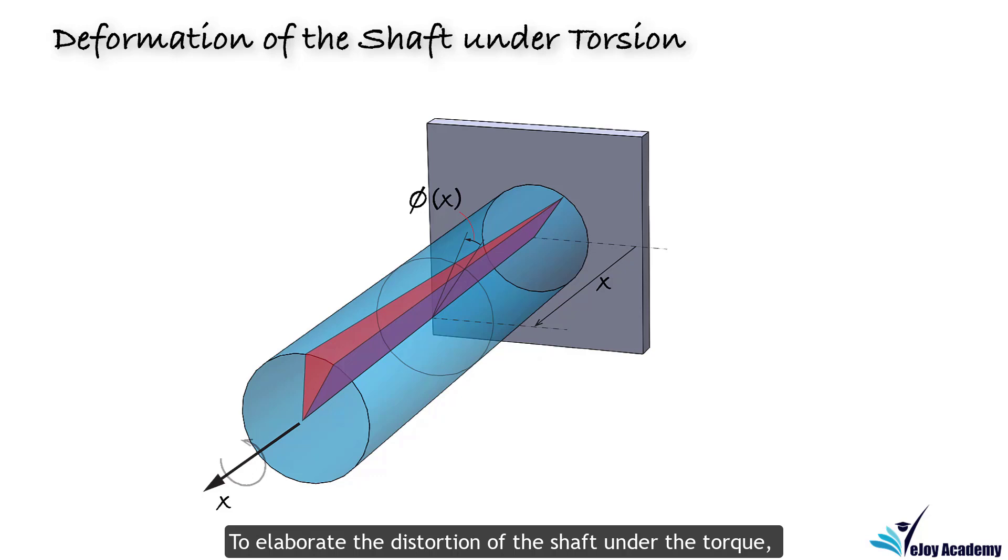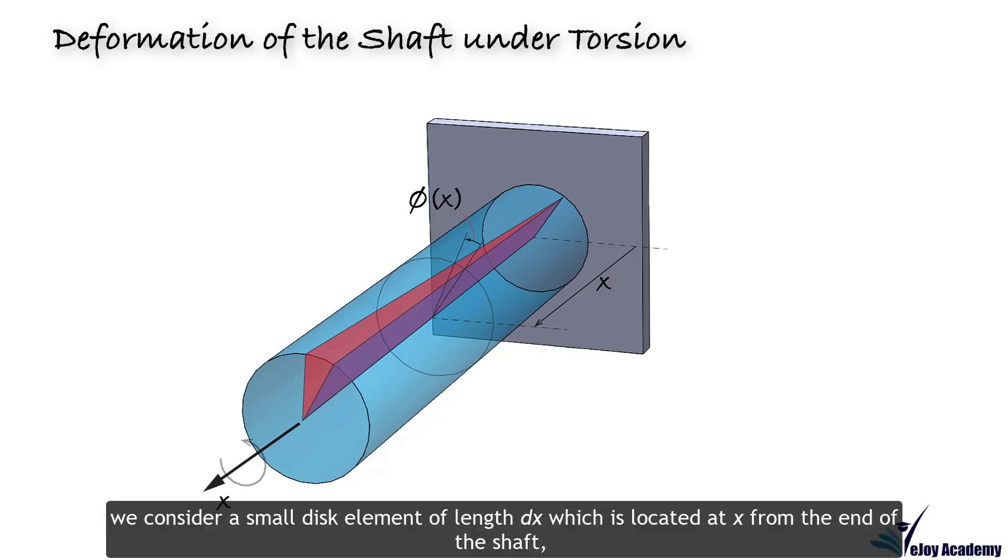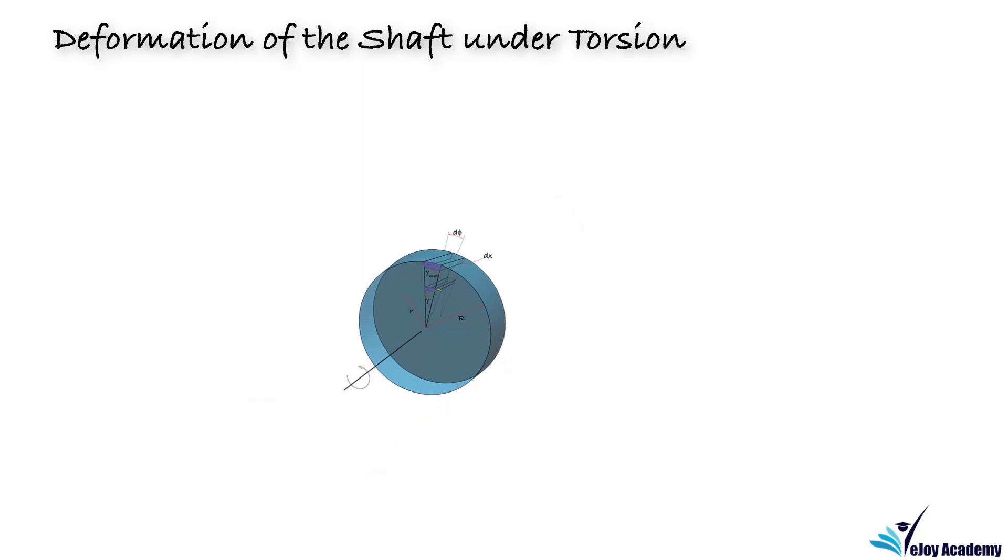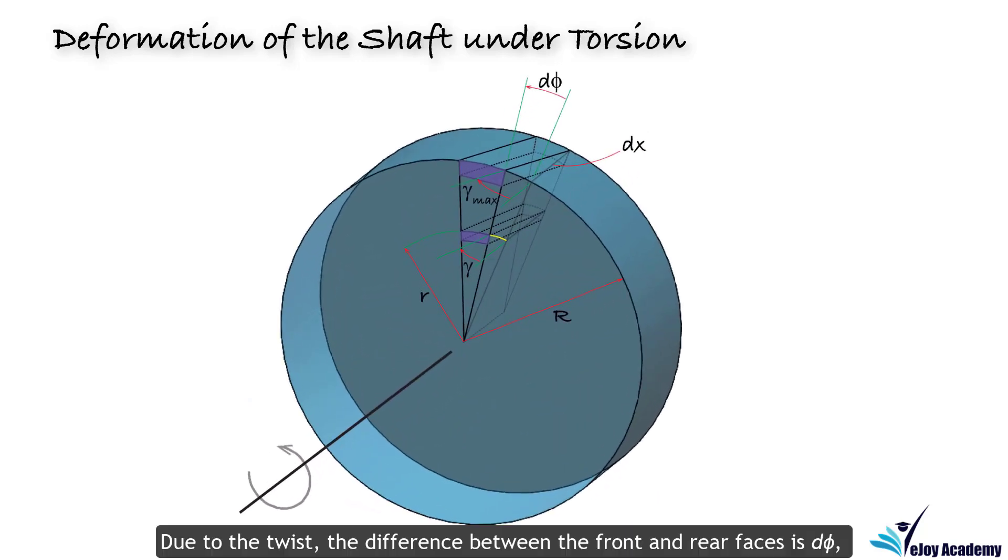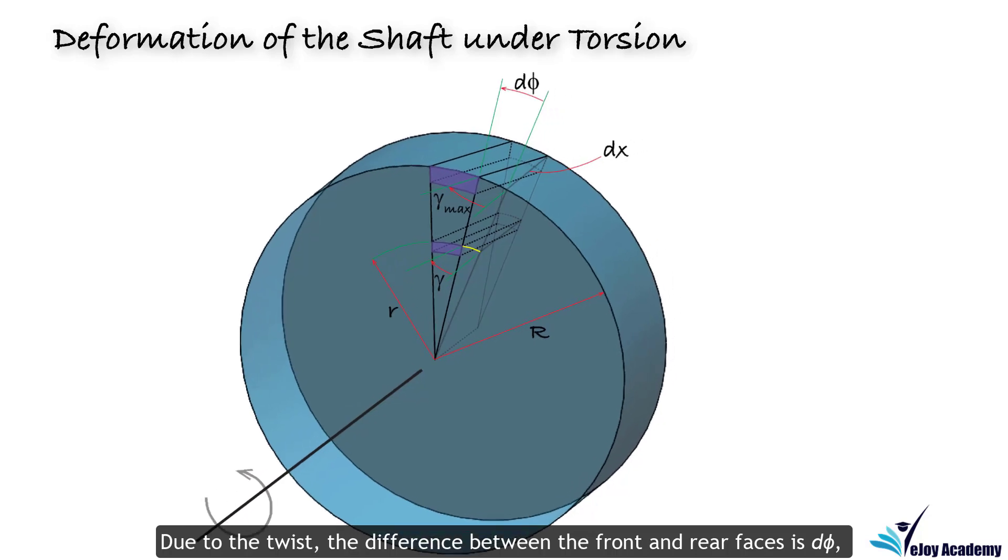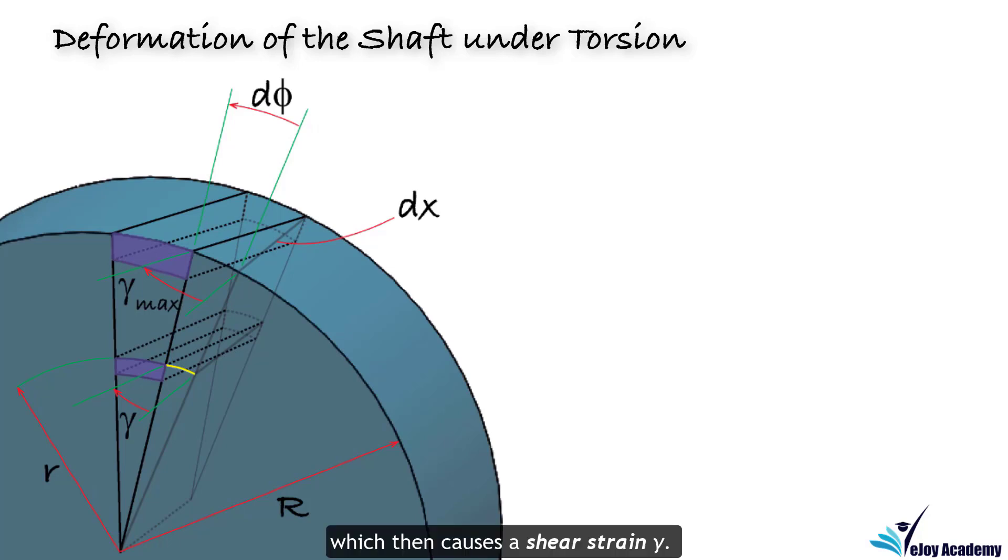To elaborate the distortion of the shaft under the torque, we consider a small disc element of length dx, which is located at x from the end of the shaft, undergoing the rotation of phi x. Due to the twist, the difference between the front and rear faces is d phi, which then causes a shear strain gamma.